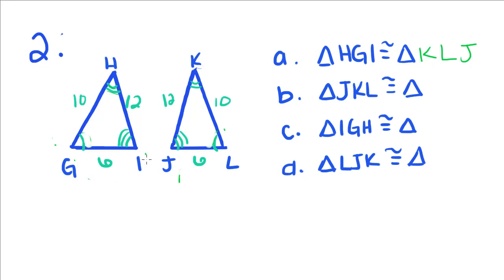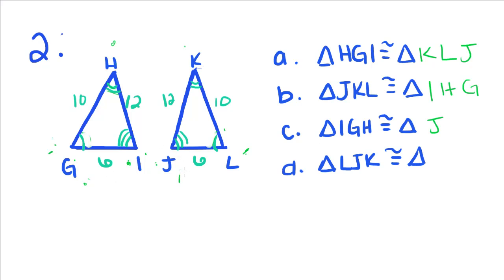Triangle JKL is congruent with — if I start with J, I have to start with I, so triangle I. Then I went to K, so I have to go to angle H. Then I went to angle L, so that means I have to go to angle G, because L and G are congruent. Same thing but starting with I: I go to G, then H. So starting with I, I have to start with J on this one, then I went to G so I go to L, then up to H so I go up to K.